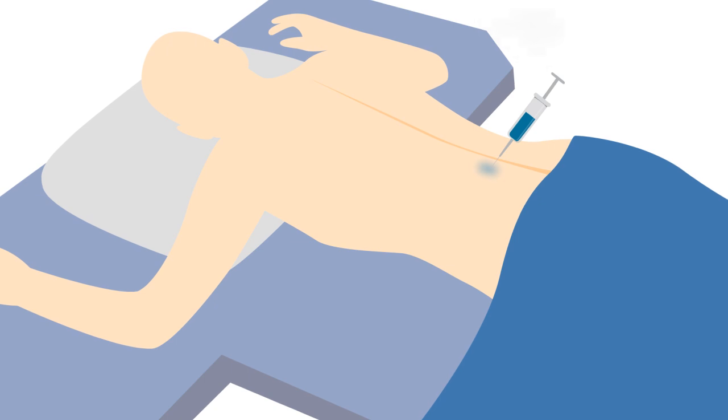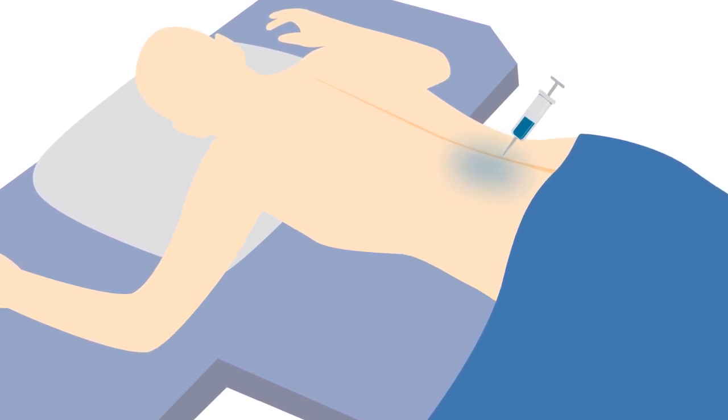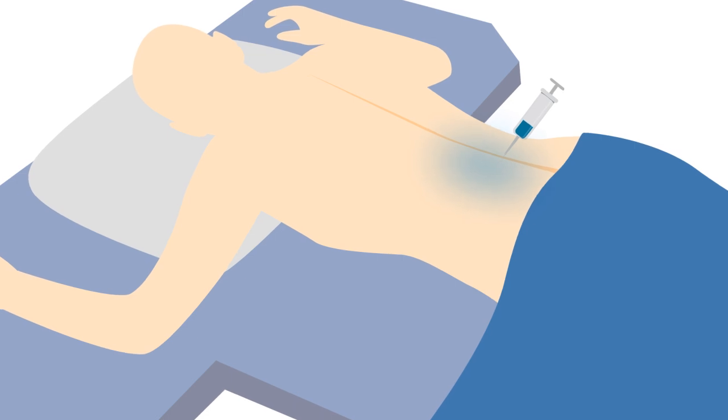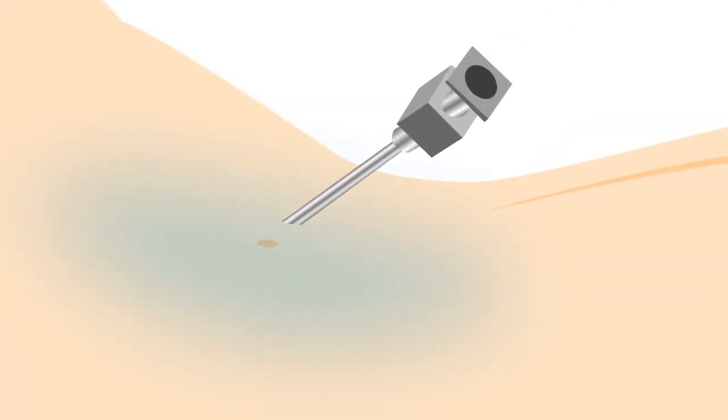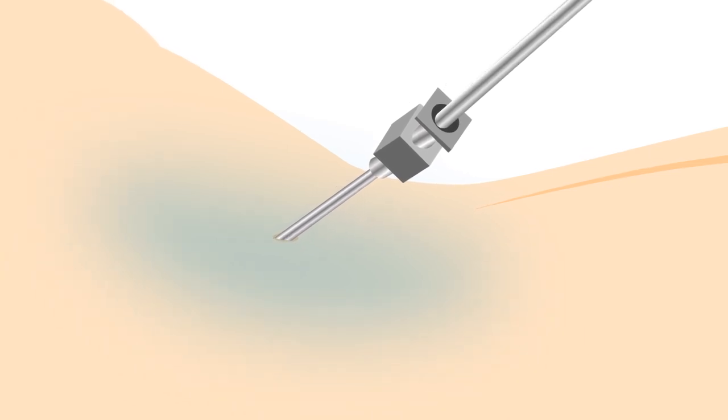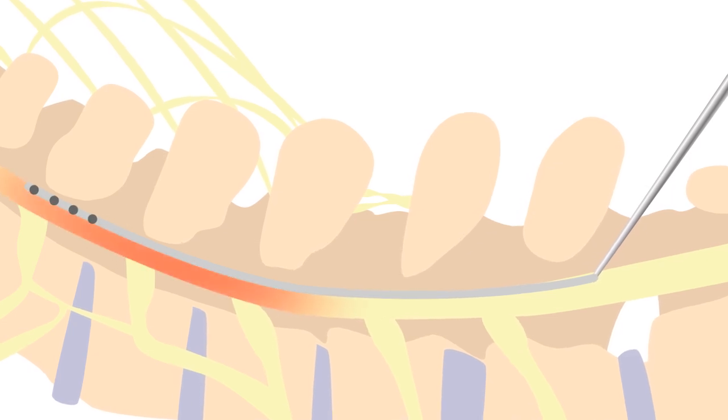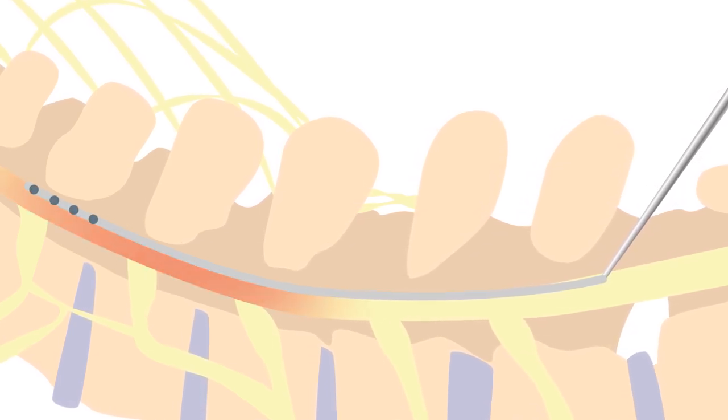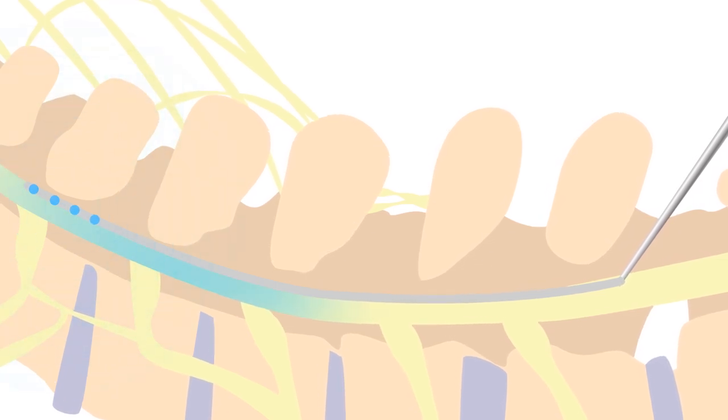Prior to a final spinal cord stimulator being placed, a trial procedure is necessary. For this, the lower back is sterilized and anesthetized, and a small incision is made to delicately insert the electrode into the epidural space around the spinal cord. The electrode is then stimulated from a programming unit that is attached outside the skin, and the patient relays feedback regarding coverage of the painful area.